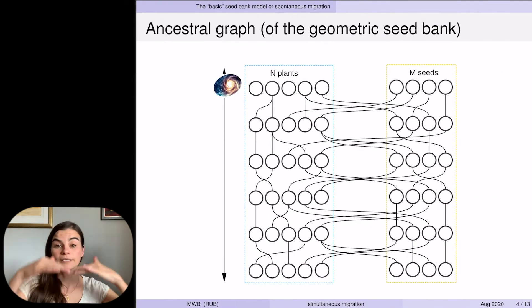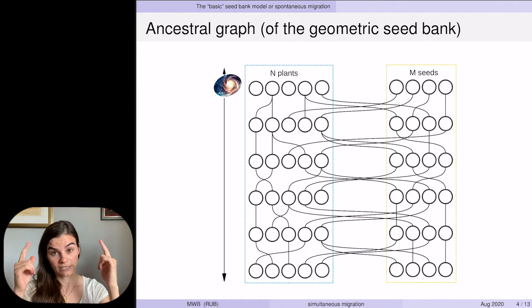This mechanism we can now iterate both forward and backward in time. We get this kind of bi-infinite random graph on which we want to define two processes that describe the evolution of our population, one forward and one backward in time.